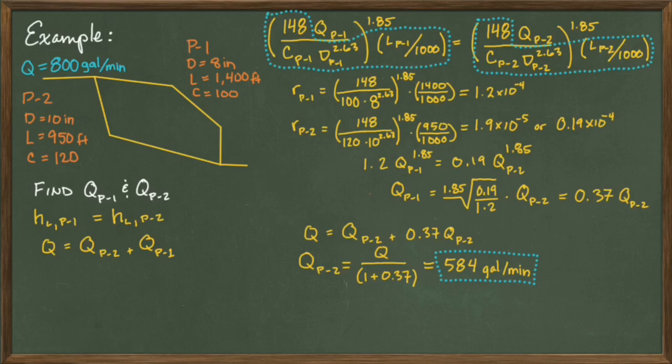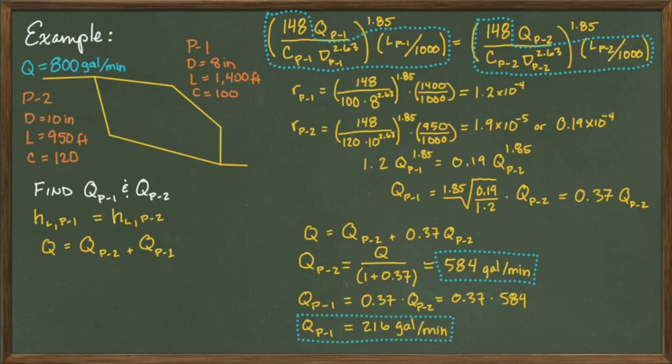Plugging that value back into our continuity equation, we get the flow rate in pipe 1 is equal to 0.37 times the flow rate in pipe 2, which is equal to 0.37 times 584 gallons per minute, or in other words, 216 gallons per minute for the flow rate in pipe 1.